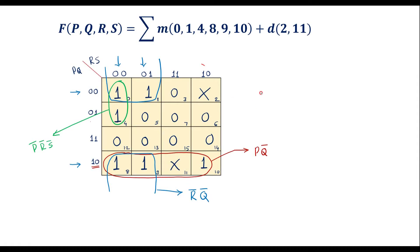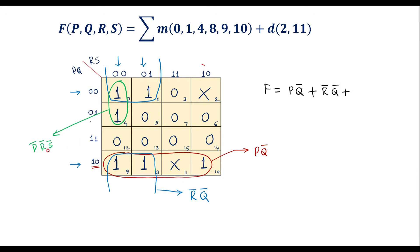Therefore, the simplified expression is F equals PQ bar plus R bar Q bar plus P bar R bar S bar. This is the simplified Boolean expression obtained using KMAP.